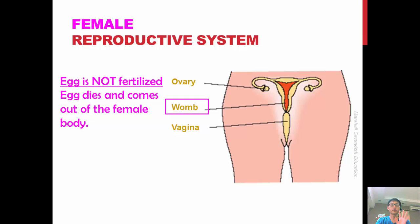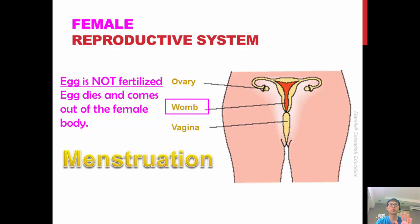If fertilization does not take place and the egg is not fertilized, the egg will die and come out of the female body. This is known as menstruation.